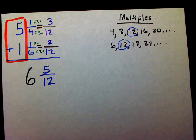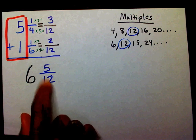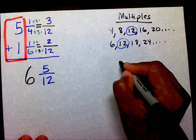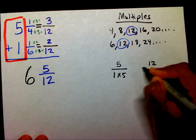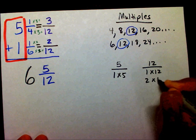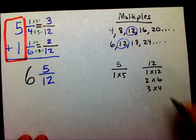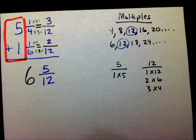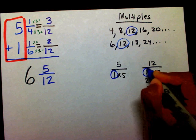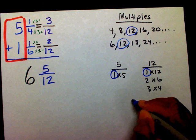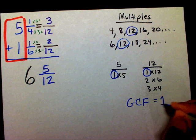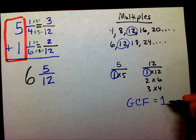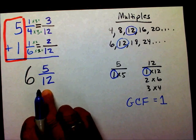Now at this point, I want to make sure that this number, this fraction right here, is in lowest terms. So let's check that. I'm going to make a list of my factors for 5 and my factors for 12. What factors do they have in common? Only 1. So since my greatest common factor, the only number they have in common is 1, since my greatest common factor is 1, I know that this 5 twelfths is in the lowest terms. And this is my final answer.